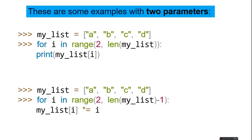There are some examples with two parameters. My_list equals a, b, c, d. For i in range 2, len my_list, print my_list i. The 2 is the starting position which is c, and the list length equals 4. Then it will print the list from 2 to 4, which is c, d.